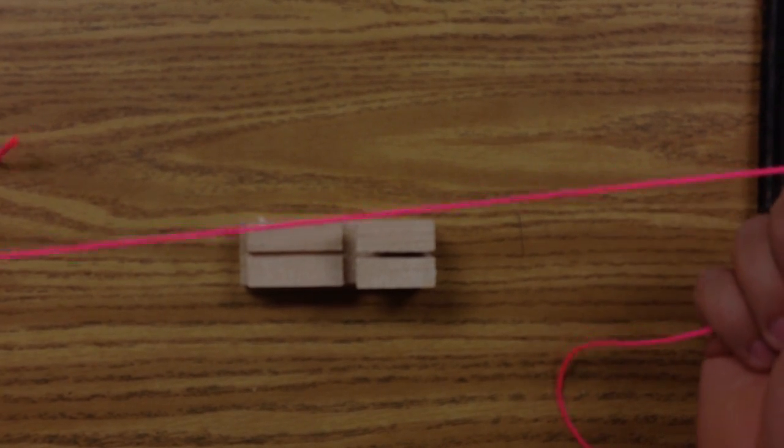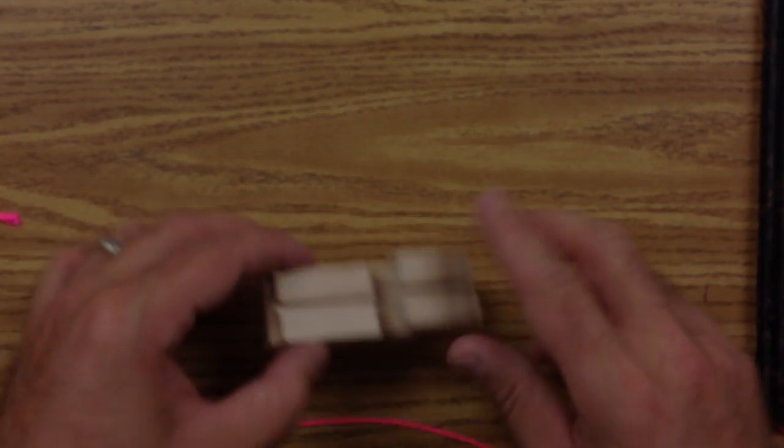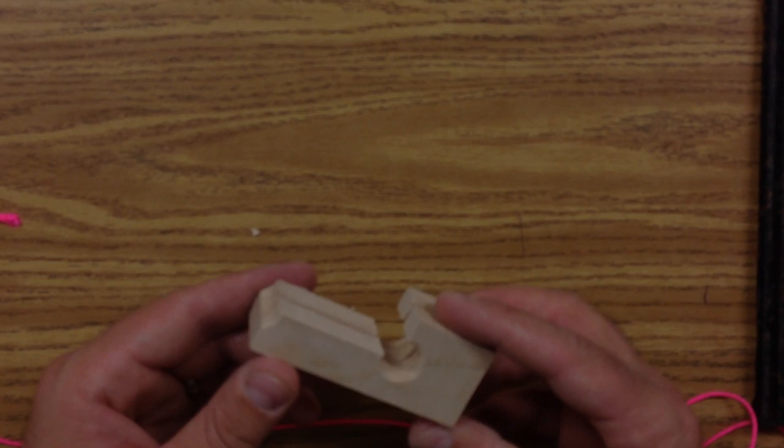Now this is a mason line. Sometimes they're pink, sometimes orange. And this is the line block. They also call it the mason's block.